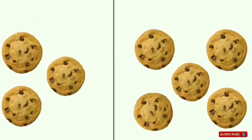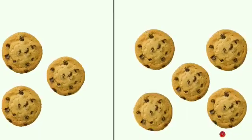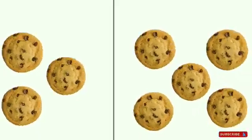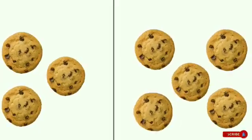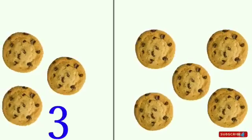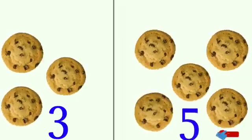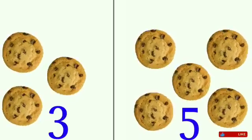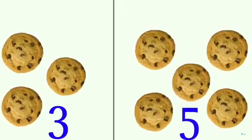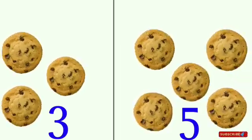Children, these are cookies. The first group has one, two, three — three cookies. And the second group has one, two, three, four, five — five cookies. The first group has three cookies and the second group has five cookies. Now can you tell me which group has more cookies and which group has less cookies?